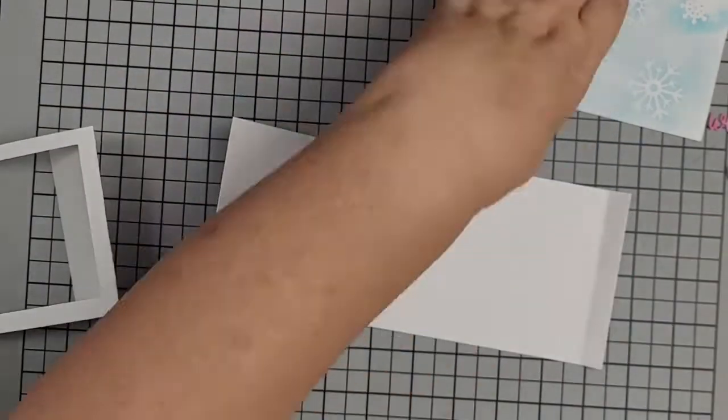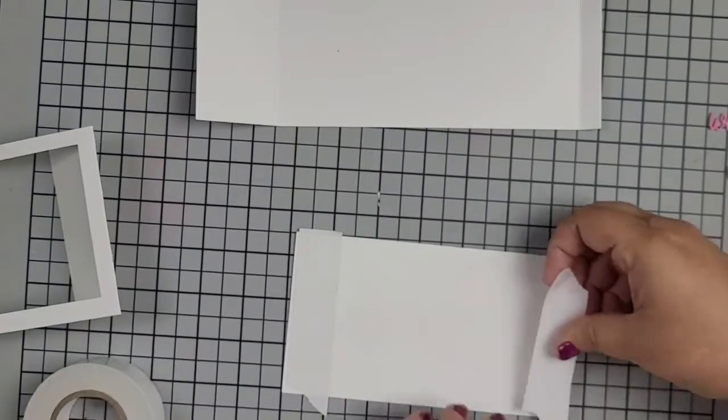Now we're going to start putting the slimline shadow box die set together. Sorry if you hear the squeaker in the background, that is my one year old puppy that we replaced his pacifier last night.